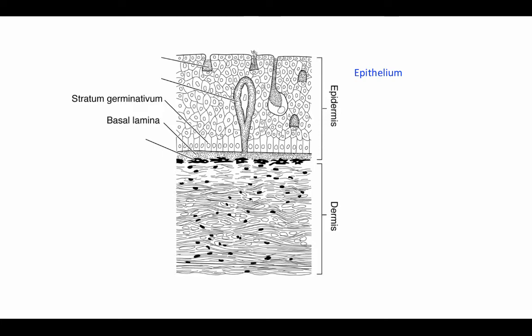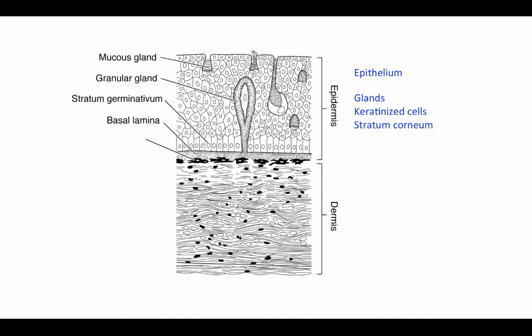The epidermis is a tissue type called an epithelium — a layer or sheet of very tightly packed cells in close association through tight junctions. Within the epithelium, we find structures such as glands and keratinized cells. Keratin is a lipid-rich protein structure that helps make the skin tough and waterproof. In land-dwelling vertebrates, this forms a layer at the surface called the stratum corneum, which consists of completely keratinized cells.